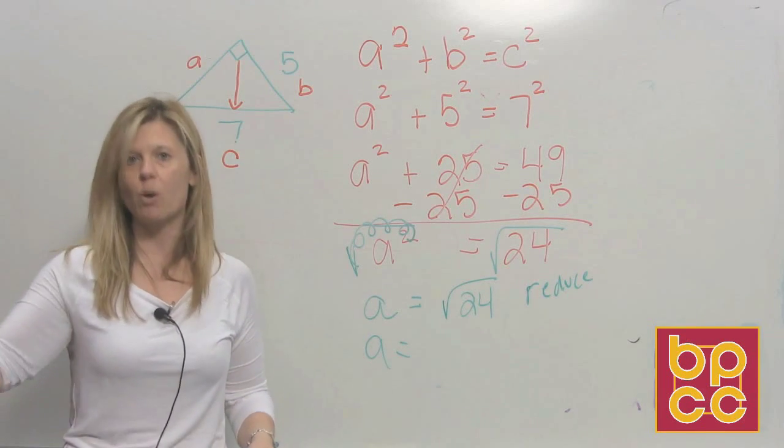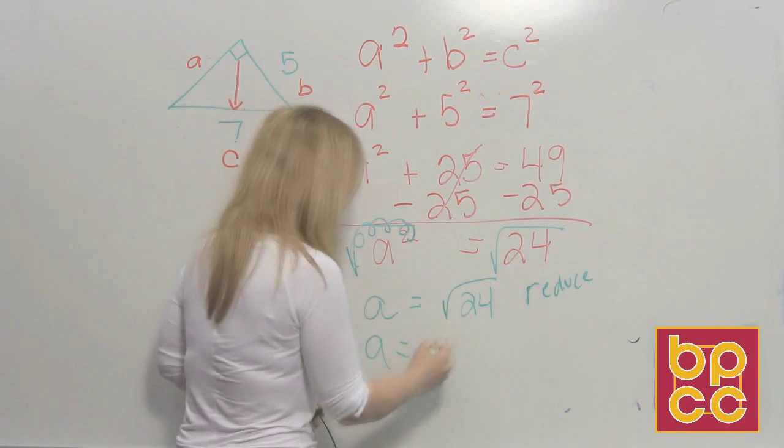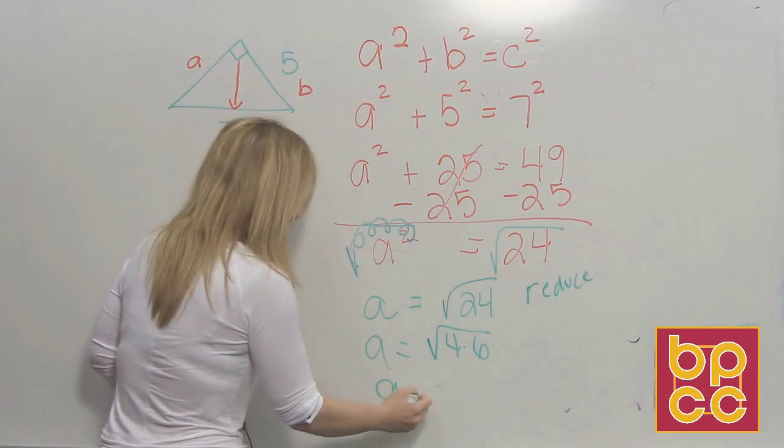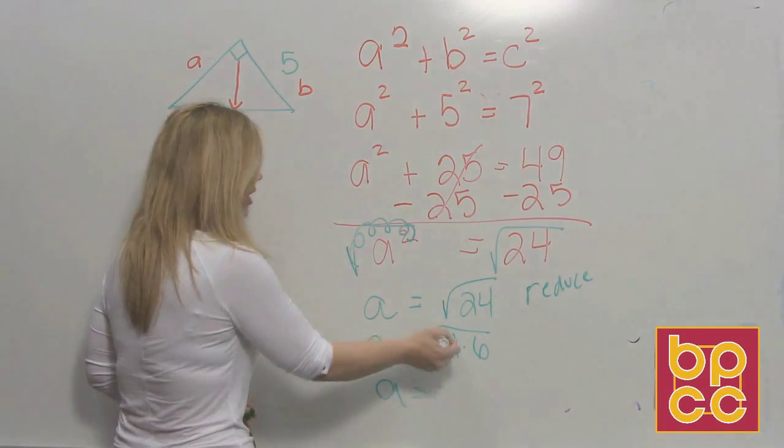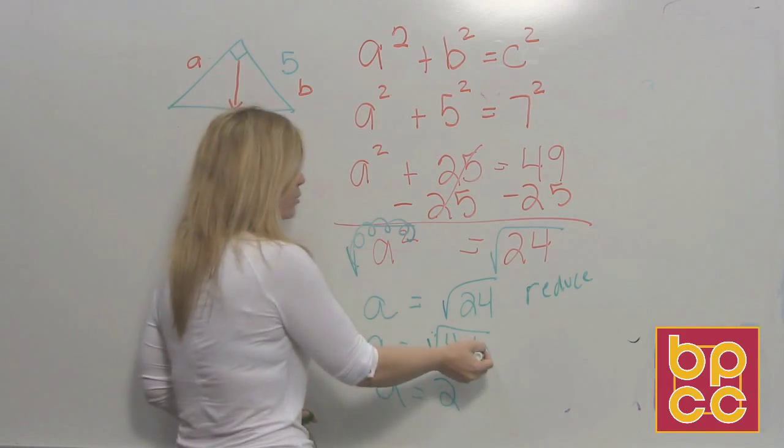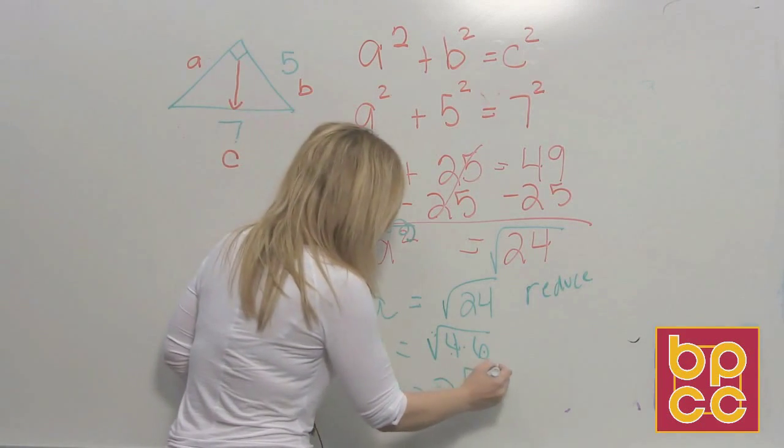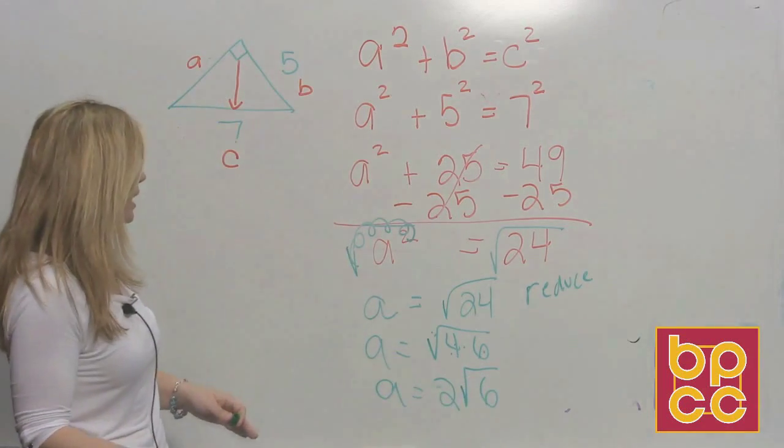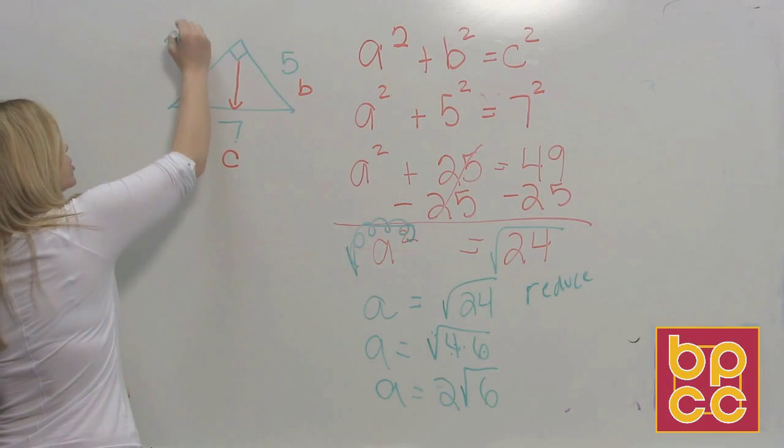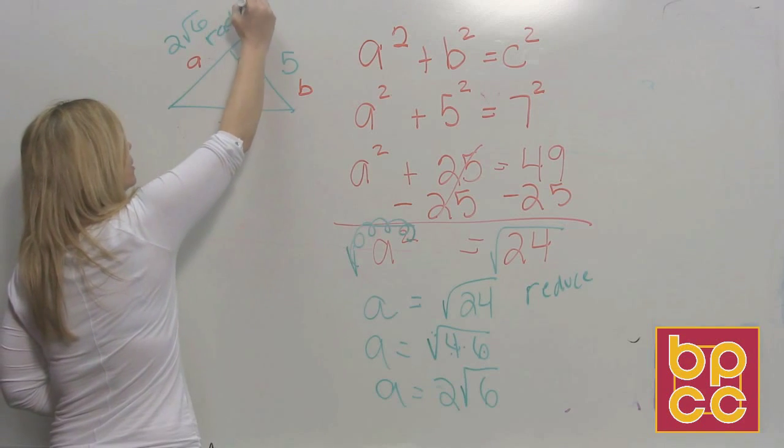So, what perfect square is in 24? Do you remember your list? 1, 4, 9, 16, 25, 36, 49, 64, 81, 100. 4 divides into this. So this is 4 times 6. Which number can I square root? I can square root 4. What is the square root of 4? 2. It comes out. Can you square root 6? No. There's no number times itself that is 6. So we leave 6 inside. So the answer is the length of side A is 2 square root 6.